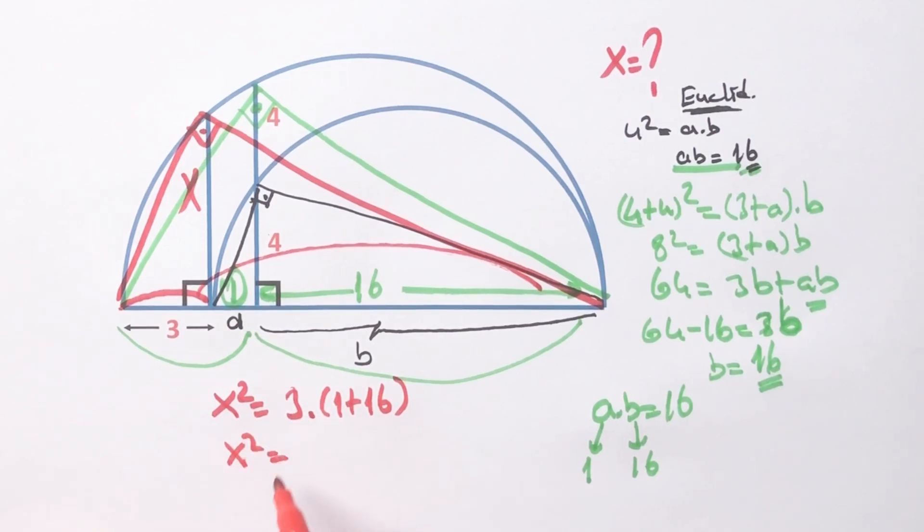So x squared equals three times 17. Therefore, x equals root 51 units.